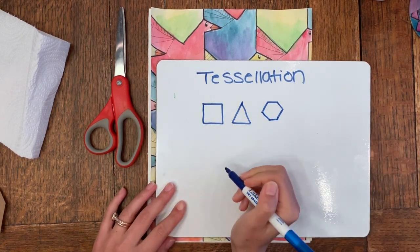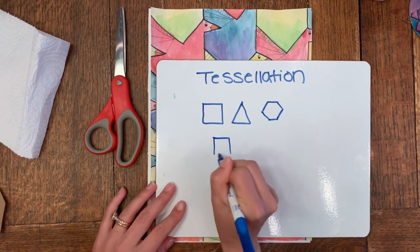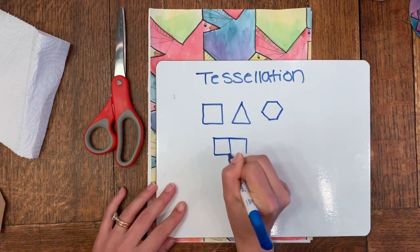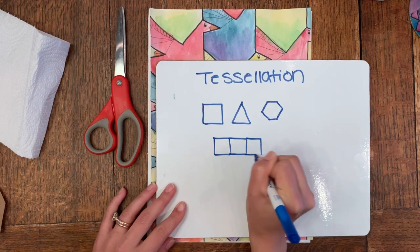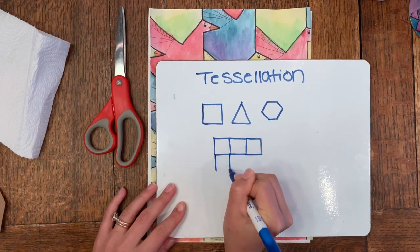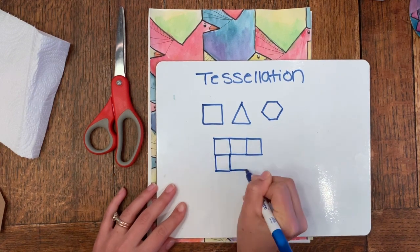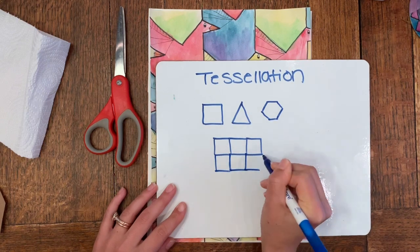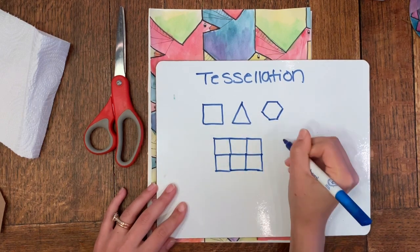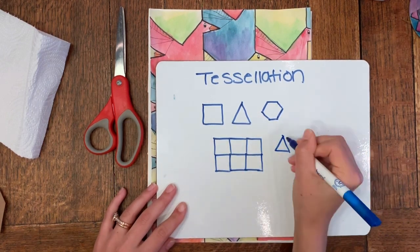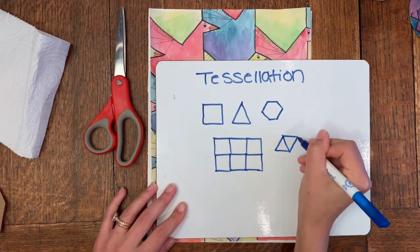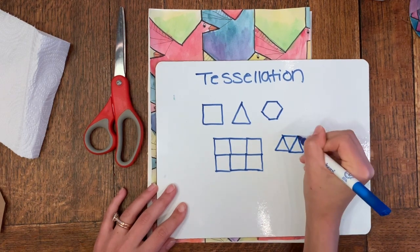For example, if I were to just draw a bunch of squares, they're going to connect together perfectly with no gaps. That creates a tessellation. Same with the triangle - I can do an upside down or right side up and upside down, and see how they start to fit together perfectly.